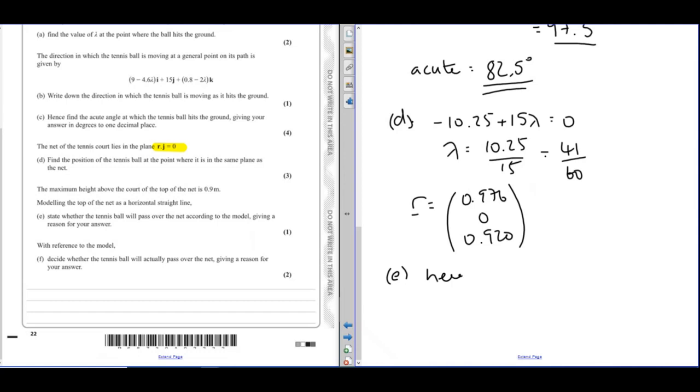So the height of the ball is 0.92 meters, which is bigger than 0.9 meters, so it will pass over the net.